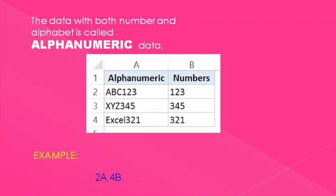Here 2 is a number data type. A is a alphabetic data type. So the combination of both the numbers and alphabets is called alphanumeric data type.